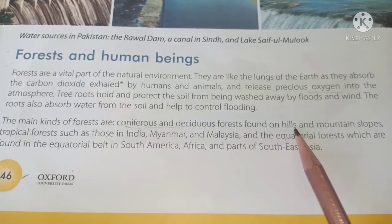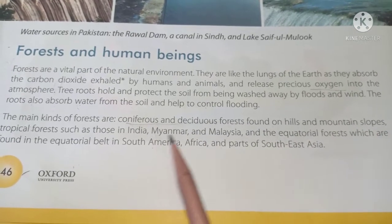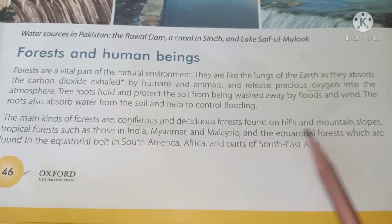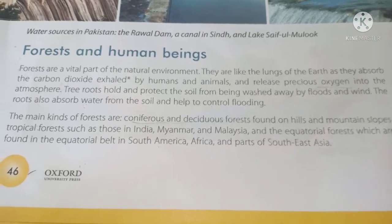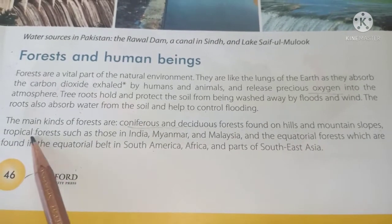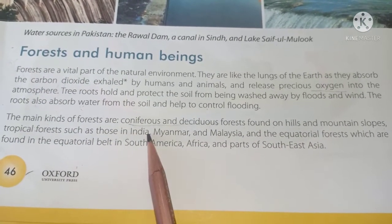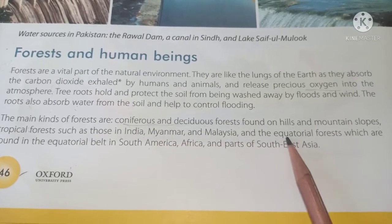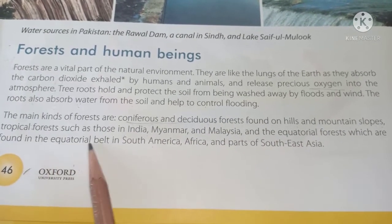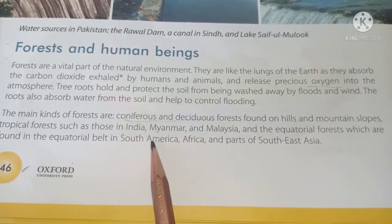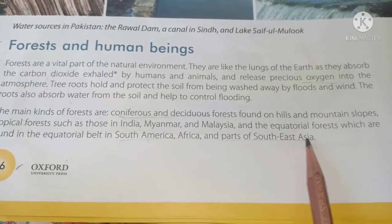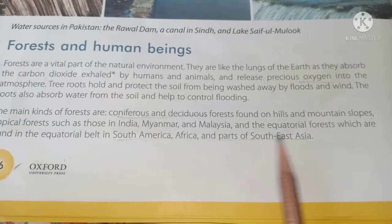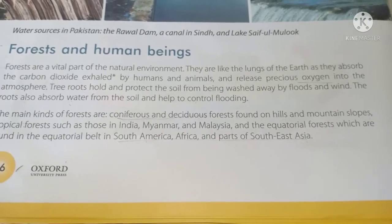The main kinds of forests are coniferous and deciduous forests, found on hills and mountain slopes. Tropical forests such as those in India, Myanmar, and Malaysia, and equatorial forests found in the equatorial belt in South America, Africa, and parts of Southeast Asia are also major types.